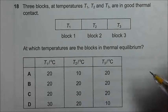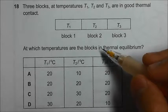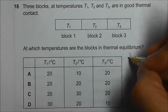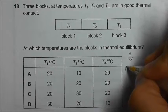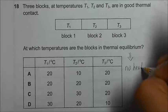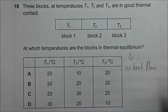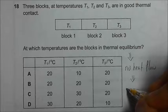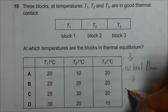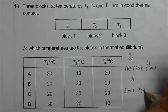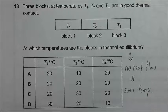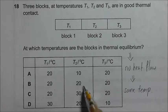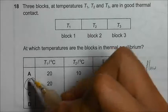Okay, in order for all the three blocks to be in thermal equilibrium, there needs to be no heat flow within the three blocks. So in order for this to occur, there must be at the same temperature. So in this case, it should be 20, 20, 20 degrees Celsius. Answer B.